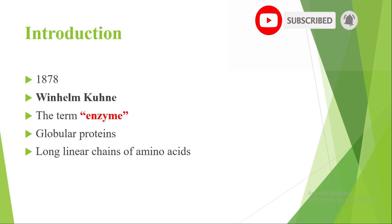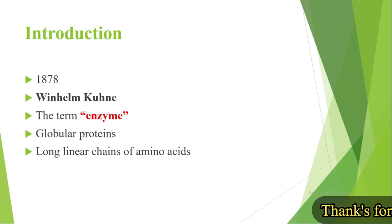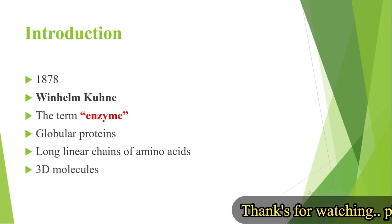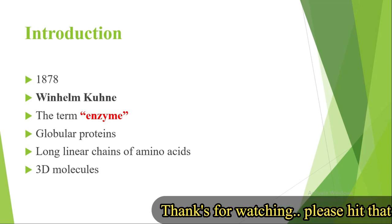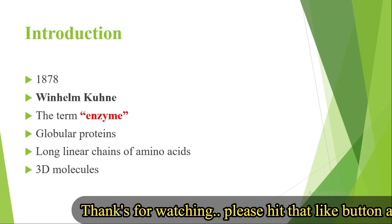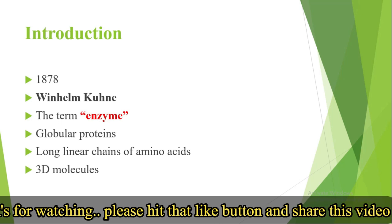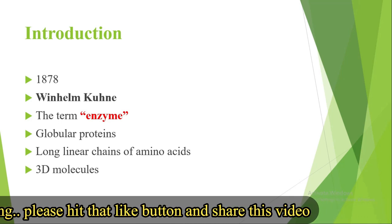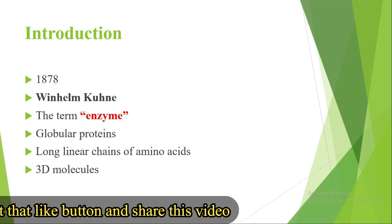Looking at the building blocks of this complex structure, there are long linear chains of amino acids. We know that amino acids are the building blocks of protein. So if an enzyme is based on proteins, it means that the building blocks of enzymes are amino acids. These amino acids arrange into 3D molecules to create a globular structure. So an enzyme is a globular protein with a 3D structure.